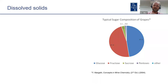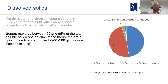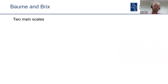We don't actually directly measure sugars in juices and ferments, but rather an associated property such as density or refractive index. Sugars in juices make up between 90 and 95 percent of the total soluble solids, and as such these measures are a good guide to sugar content. The two tools most commonly used — refractive index and density — vary significantly with the amount of sugar, so they're a good way of doing it.